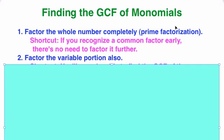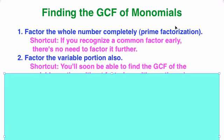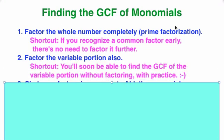You're also going to factor the variable portion. For example, x squared would be x times x. But as soon as you are comfortable with this procedure, you'll be able to find the GCF of the variables without factoring. When you're first learning the technique, it's important that you actually factor things — like y cubed is y times y times y. The rest will come with practice.